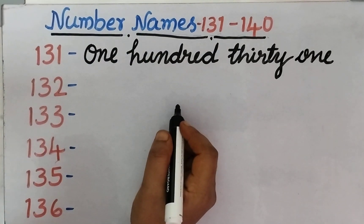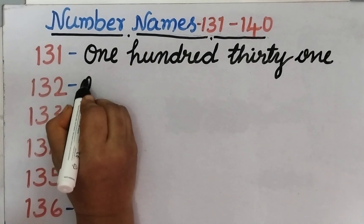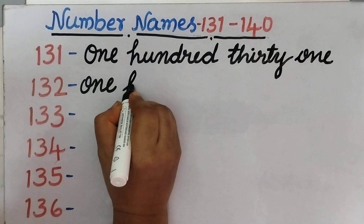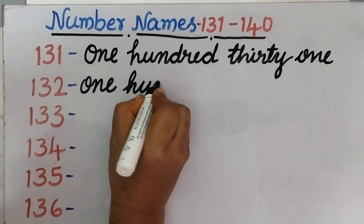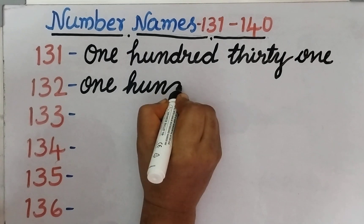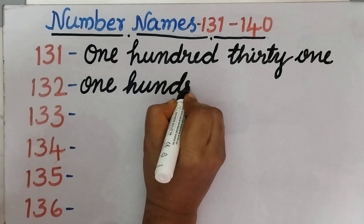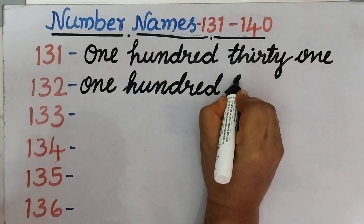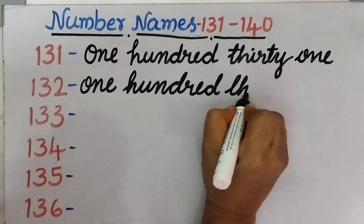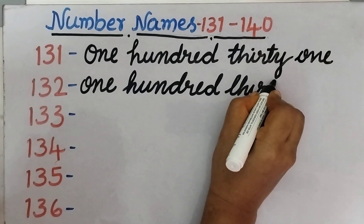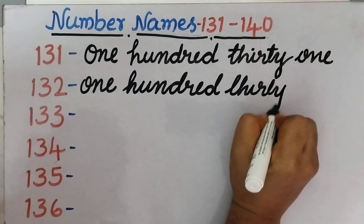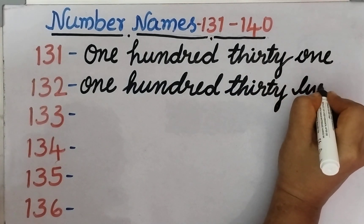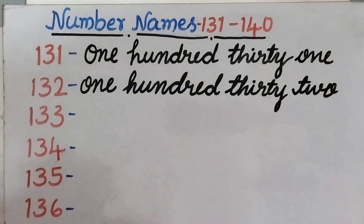Next, 132. O, N, E — 1. H, U, N, D, R, E, D — 100. And 32 — T, H, I, R, T, Y. T, W, O — 2.